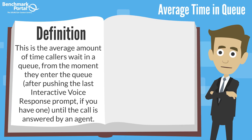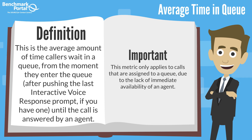Now let's turn to average time in queue. This is the average amount of time callers wait in a queue from the moment they enter the queue after pushing the last interactive voice response prompt, if you have one, until the call is answered by an agent. This metric only applies to calls that are assigned to a queue due to the lack of immediate availability of an agent. Some systems, however, will assign all calls to a queue if only for a split second before directing the call to an available agent.